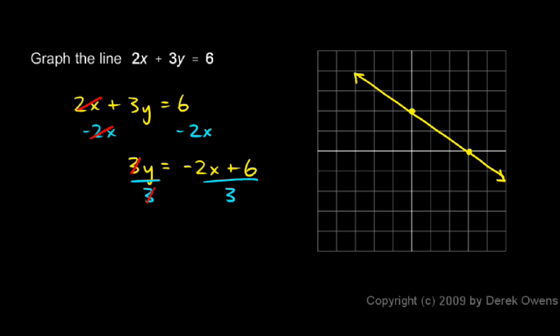On the left, the 2x and the minus 2x cancel. That leaves me with 3y equals negative 2x plus 6. Then I'll divide both sides by 3. On the left, the 3s cancel, so it's solved for y. On the right, I can divide each of these terms by 3, so I have y equals negative 2 thirds x plus 6 over 3, which is 2.